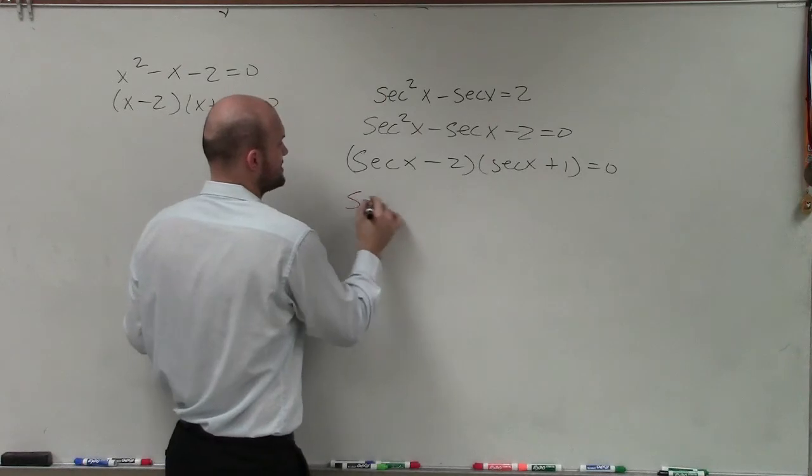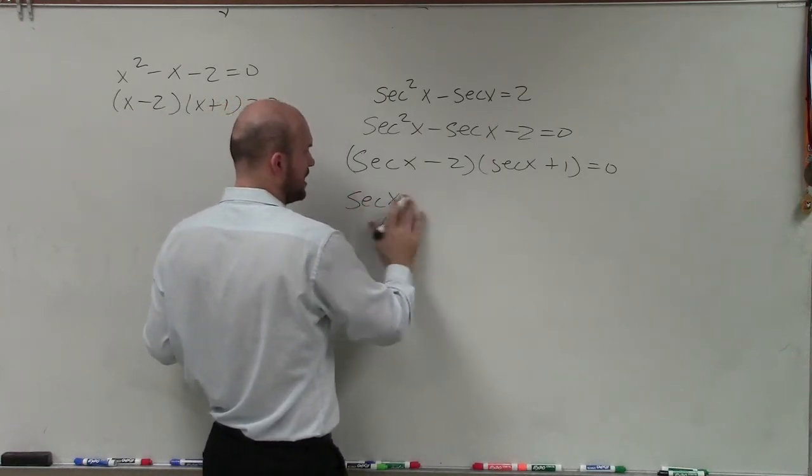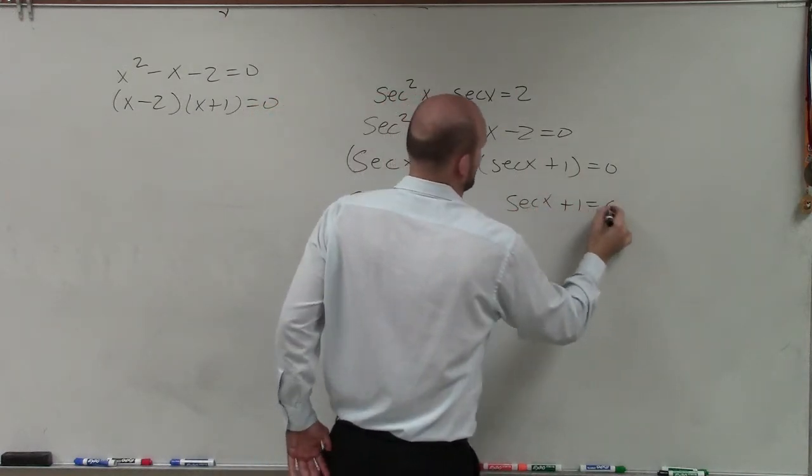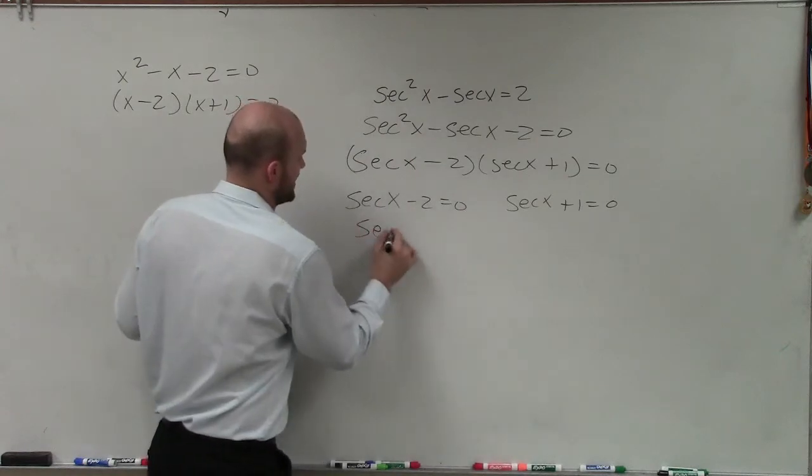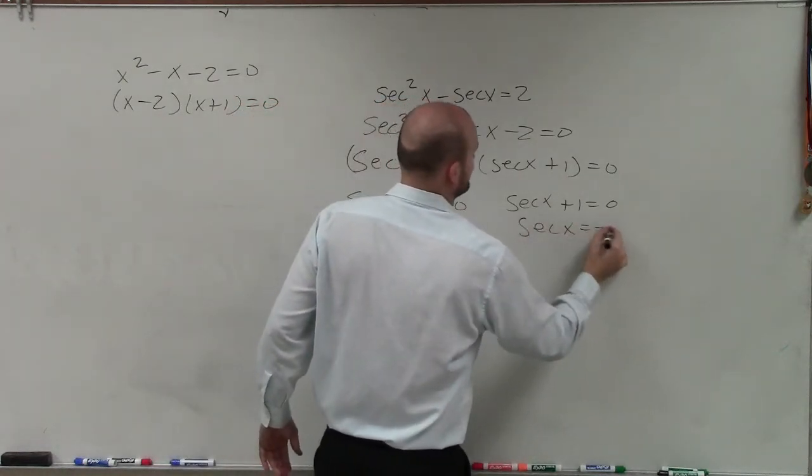Now I solve both of these for 0. So I have secant of x minus 2 equals 0, and secant of x plus 1 equals 0. So now solving, I have secant of x equals 2, and secant of x equals negative 1.